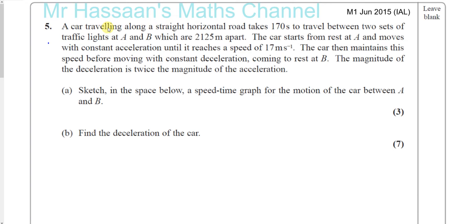A car traveling along a straight horizontal road takes 170 seconds to travel between two sets of traffic lights at A and B, which are 2,125 meters apart. The car starts from rest at A and moves with a constant acceleration until it reaches a speed of 17 meters per second. The car then maintains this speed before moving with a constant deceleration, coming to rest at B. The magnitude of the deceleration is twice the magnitude of the acceleration.